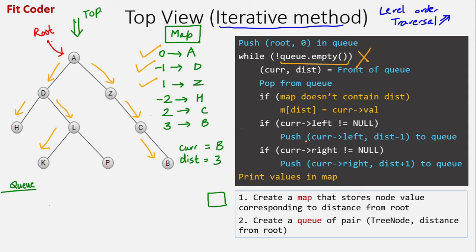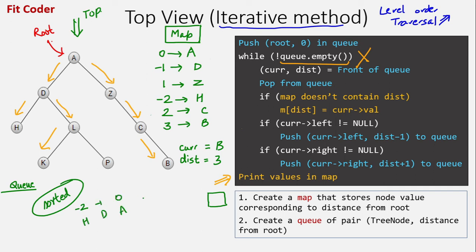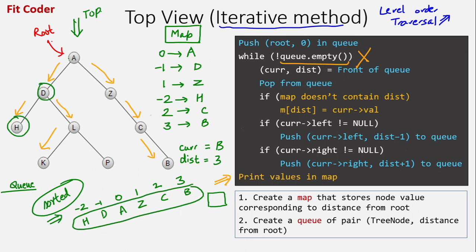In the next iteration, the queue is empty so the while loop terminates. The last step is to print the values of the map. Since the map in C++ or Java is sorted, it prints: minus two maps to H, minus one maps to D, zero maps to A, one maps to Z, two maps to C, and three maps to B. So the top view is H, D, A, Z, C, B.